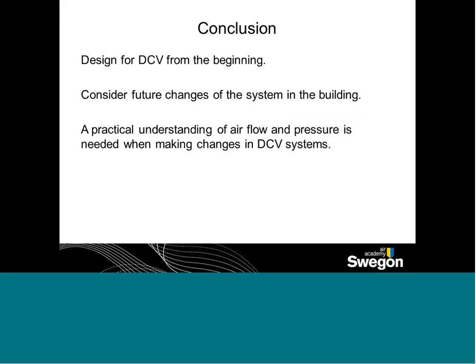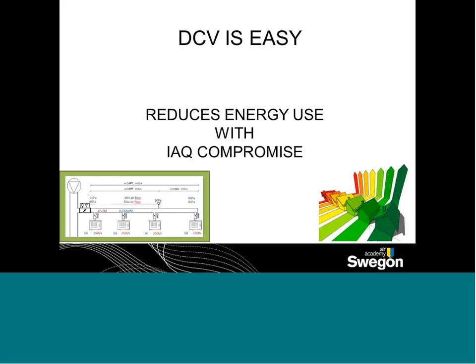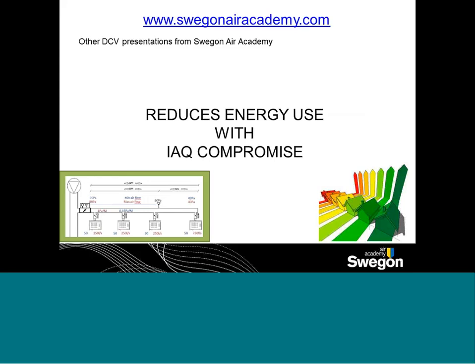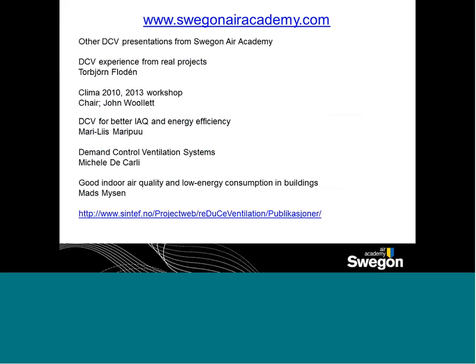In conclusion: design for DCV from the beginning, anticipate future changes in the building system, and you need good practice to understand airflow and pressure, and what it means to make changes to a DCV system. It's not rocket science, but you need to understand how they work together. DCV is pretty easy, but you need to make sure you can reduce energy without compromising IAQ. Please look up the Sweden Air Academy website — there's lots of good information there. Thank you very much.